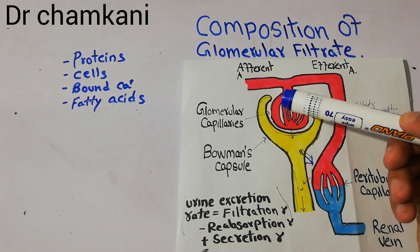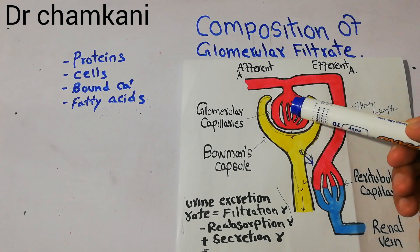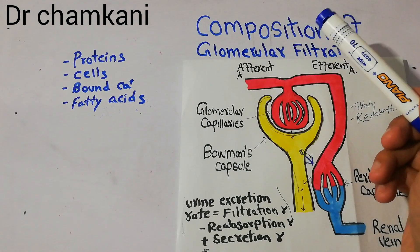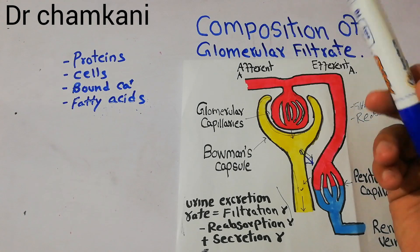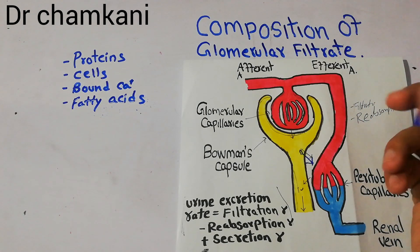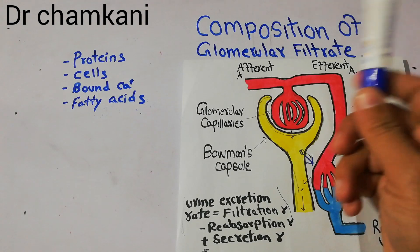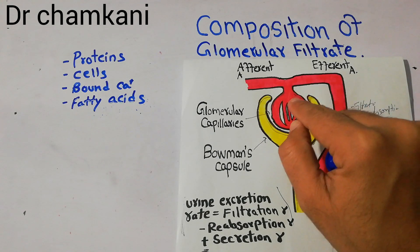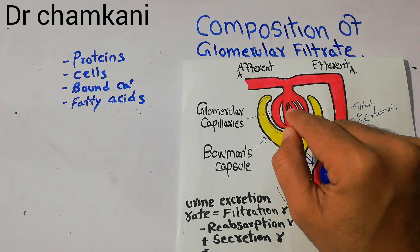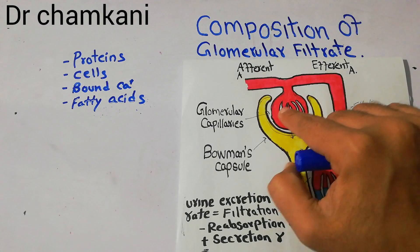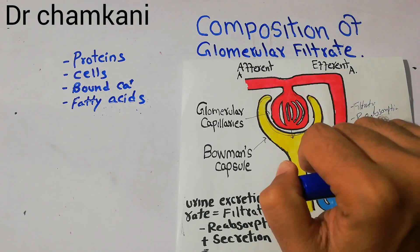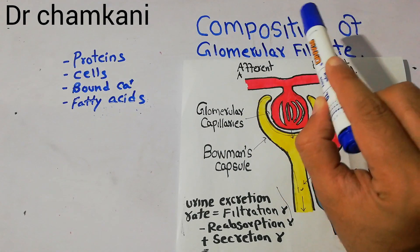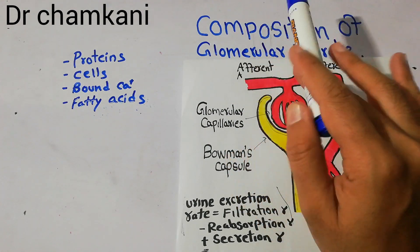Once the filtrate has come out of the glomerulus and entered the Bowman's capsule, the composition of that filtrate will contain almost all the molecules and chemicals present in the plasma, except for a few substances. Those excluded substances include, first of all, proteins. The pores of the glomerulus will not allow proteins to move out into the glomerular filtrate.